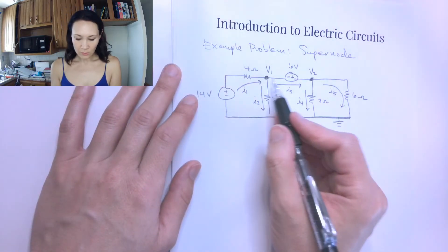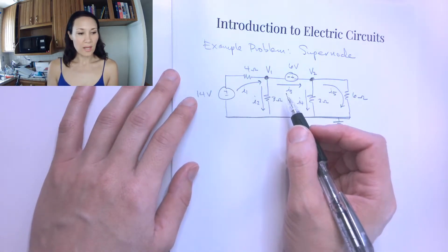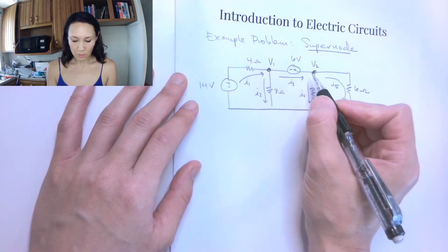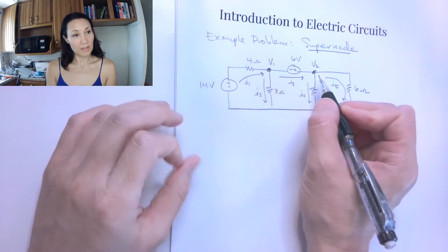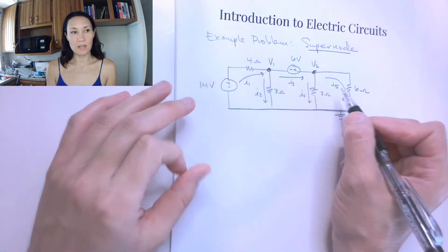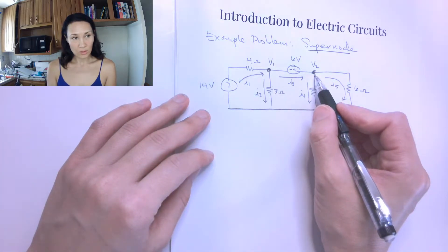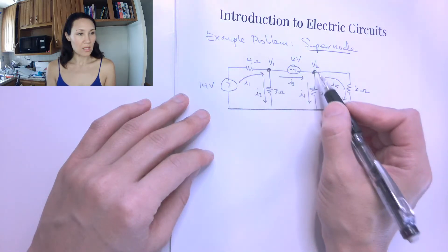So since we have a voltage source that's in between nodes V1 and V2, the method for how to handle this supernode is just for a moment while we're making the KCL equations, we're going to replace this with a wire. We're going to kind of pretend that it's not there. It's not a wire that connects V1 to V2 in that it makes it the same node. We're still going to have these as separated nodes.